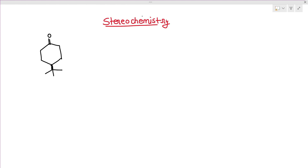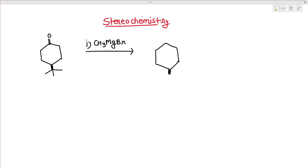Now let's understand the stereochemistry of the Grignard reagent. The Grignard reagent always attacks from the less bulky side. For example, if a compound has a tert-butyl group above the plane, the bulkier side is above the plane, so attack occurs from below the plane. This places the R group below the plane and the OH group above the plane in the product.